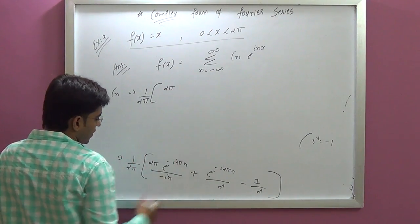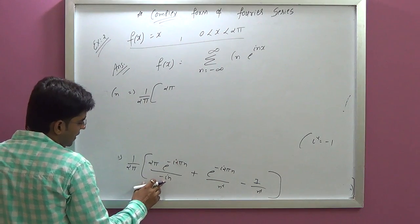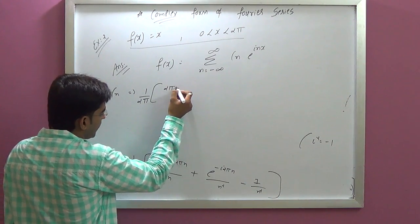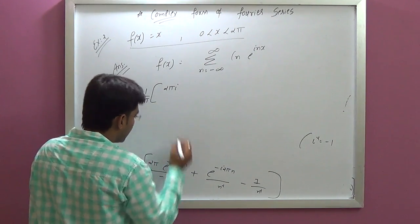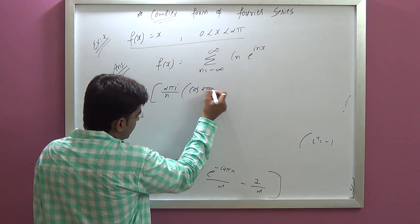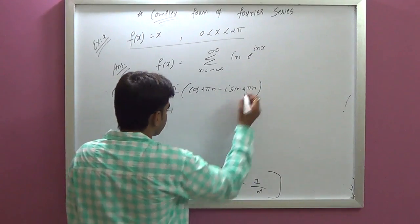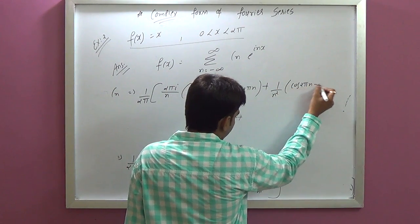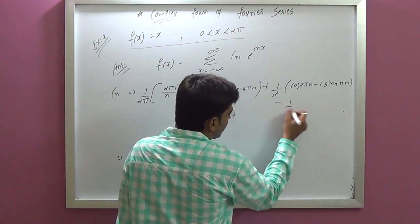We take 1 over i, which equals minus i. So applying that here, we have 1 over 2π times: minus i times 2π times cos(2πn) minus i·sin(2πn), plus 1 upon n squared times cos(2πn) minus i·sin(2πn), minus 1 upon n squared. This is the complex number expression.